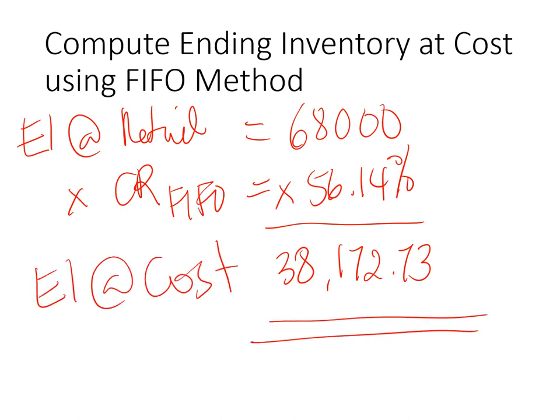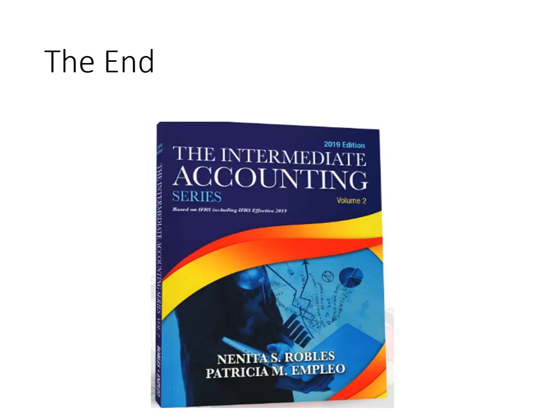The key to the retail inventory method is to familiarize yourself with the treatment of each item: departmental transfers, freight in, purchase discounts, etc. The main technique is: if there is movement of inventory, both cost and retail are affected; if not, it's either cost only or retail only. Markup and markdown always affect retail only, not cost, because markup is additional profit added to the retail price.